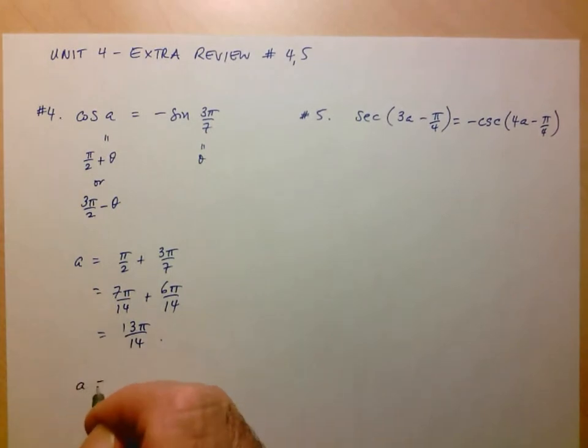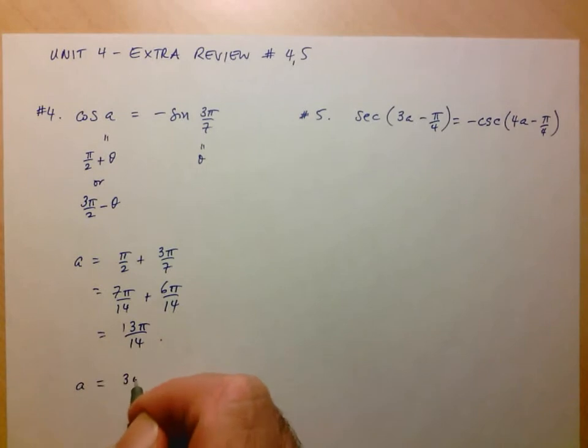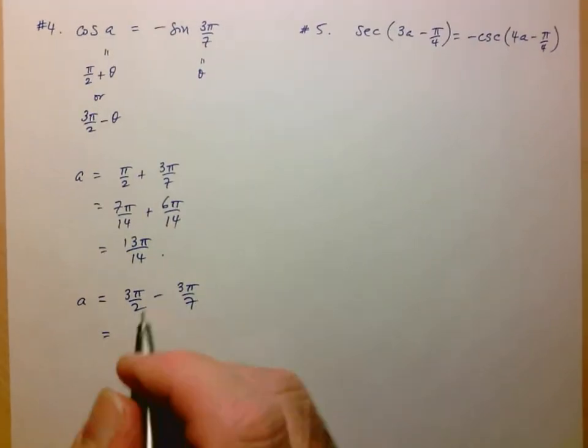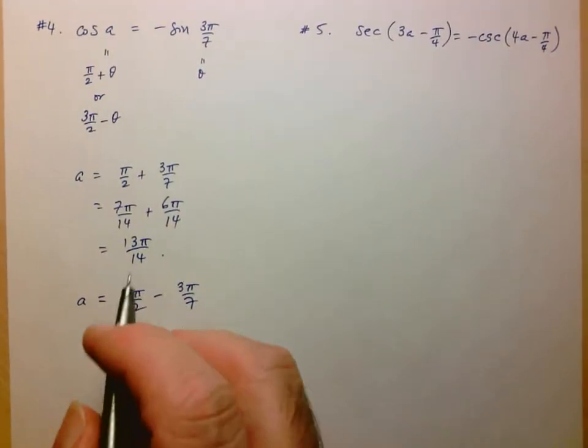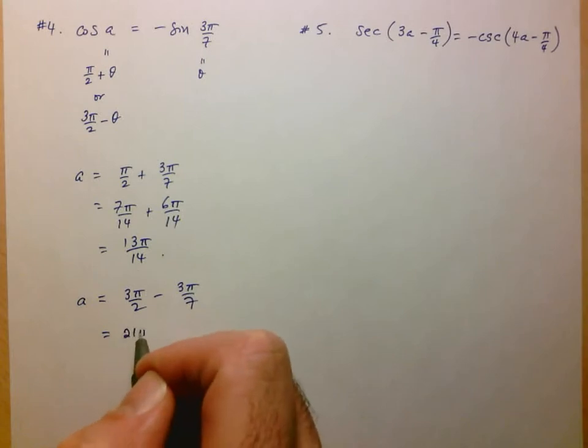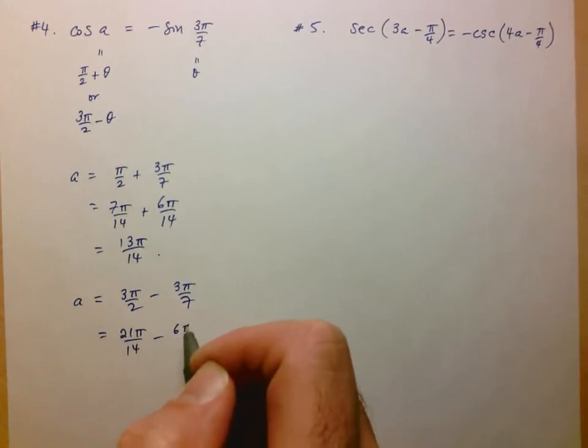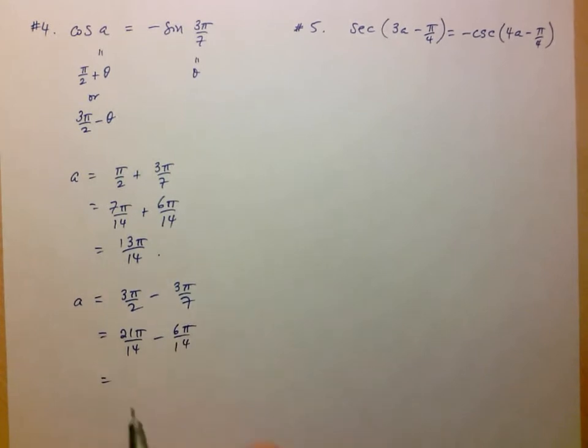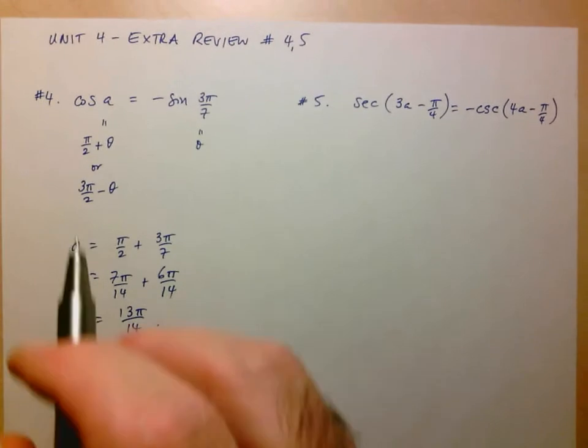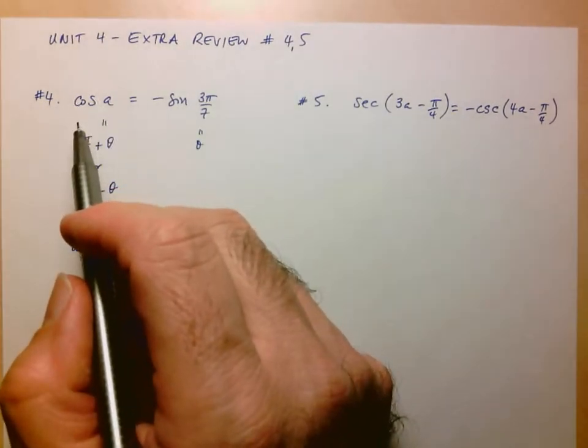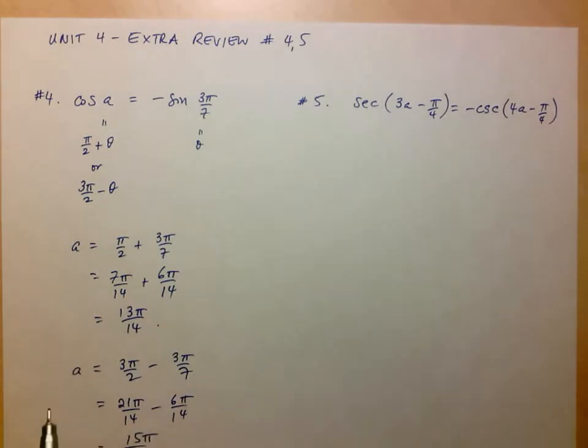The other option that I can look for is 3π over 2 minus theta, which in this case is 3π over 7. And so now, again, similarly, multiply top and bottom by 7. So we've got 21π over 14 minus 6π over 14. And so here we have 15π over 14. And in this case, this is in the third quadrant, it's just a little more than π. So it makes sense that the cosine value would be a negative number, just as the right-hand side of the equation is.